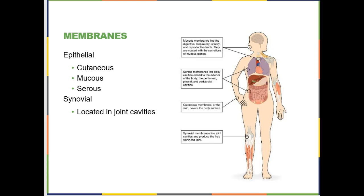There are two different categories of membranes: epithelial membranes, which have cells associated with them, and non-epithelial membranes like synovial membranes, which are just a series of proteins glued together. Synovial membranes are covered in the chapter on joints, and cutaneous membrane gets its own chapter. Here we'll focus on mucous membranes and serous membranes.